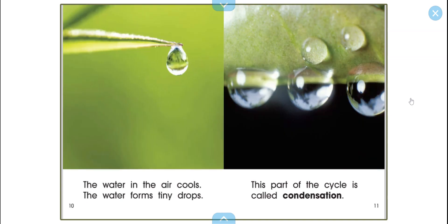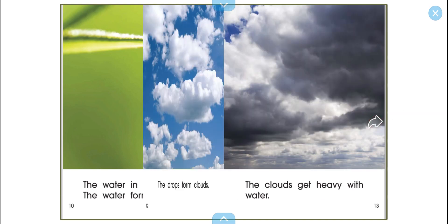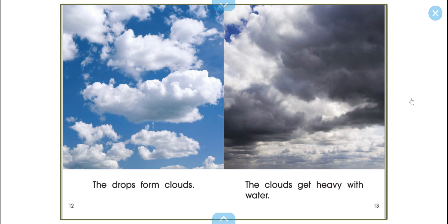The water in the air cools. The water forms tiny drops. This part of the cycle is called condensation. The drops form clouds.